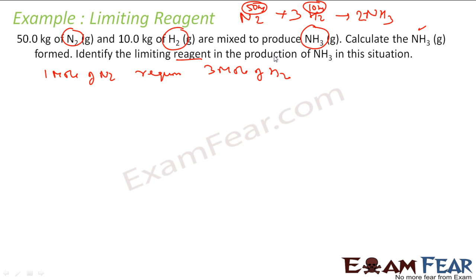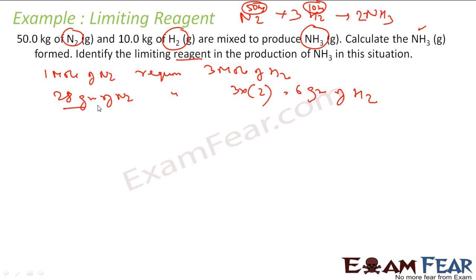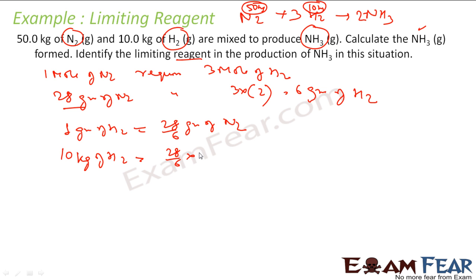1 mol of N₂ is 28 grams. So 28 grams of N₂ requires 3 × 2 = 6 grams of H₂. Therefore, 28 grams of N₂ requires 6 grams of H₂. So 1 gram of hydrogen requires 28/6 grams of nitrogen. I have 10 kg of hydrogen, so 10 kg of hydrogen will require 28/6 × 10 kg of nitrogen, which equals approximately 46.67 kg of nitrogen.